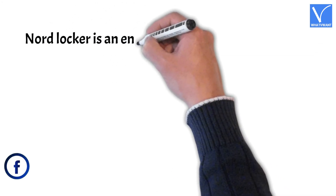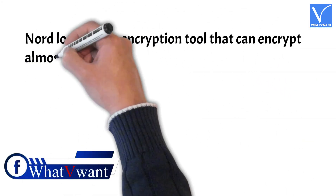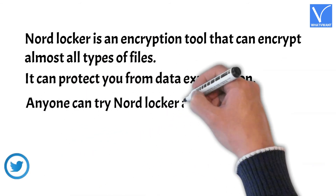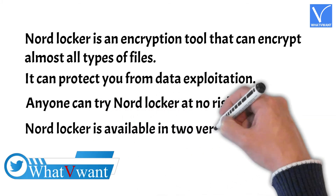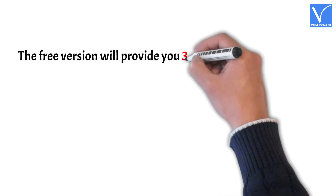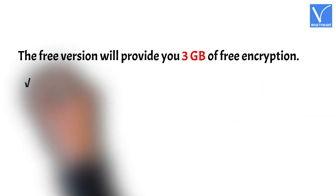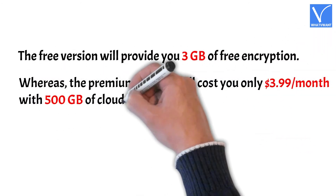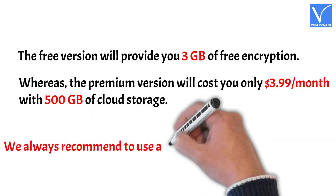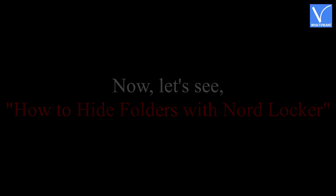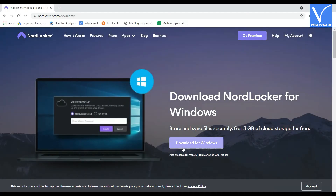Method 3: Nord Locker. Nord Locker is an encryption tool that can encrypt almost all types of files. It can protect you from data exploitation. Anyone can try Nord Locker at no risk. Nord Locker is available in two versions: Free and Premium. The free version provides 3GB of free encryption, whereas the premium version costs only $3.99 per month with 500GB of cloud storage. We always recommend using the premium version of any software for better results. Now let's see how to hide folders with Nord Locker. Firstly, download Nord Locker from its official website — check the description for its official link.